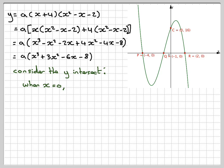So we put that in here, so y we put equal to 16, is equal to a times 0 cubed, plus 3 times 0 squared, minus 6 times 0, minus 8, and that gives me 16 is equal to minus 8a, and therefore a is equal to minus 2.